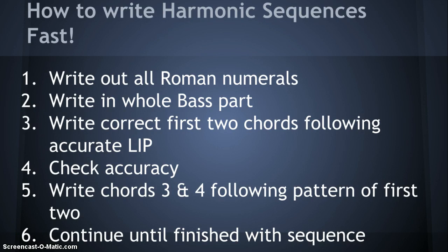First, you're given a sequence, so you're going to know what that sequence is and write down all the Roman numerals. Then you'll write down what the correct bass part is for all those chords. Then you're going to write out the first two chords following whatever pattern needs to be created, doing correct part writing for those first two chords. Double check that you've done everything right before you move on. Then from there you just copy — it's like copy-paste — you copy those first two chords as chords two and three and move them up or down however much they need to be moved, making sure you have the sequence and the pattern.